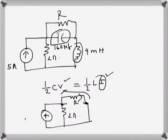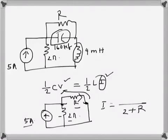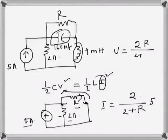We can work that out here. We have two parallel branches: resistor R and two ohms. The full current is 5 here. Current I will be 2 over 2 plus R, times 5. The voltage V will be the voltage drop across resistor R, so V equals 10R over 2 plus R.